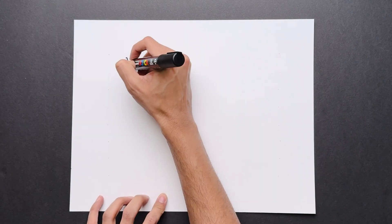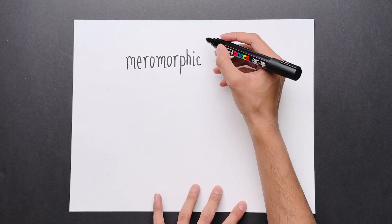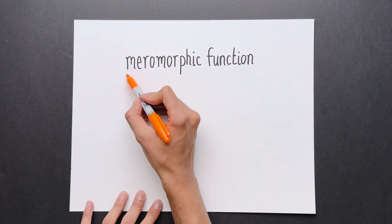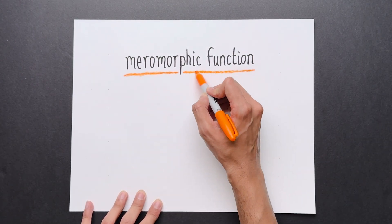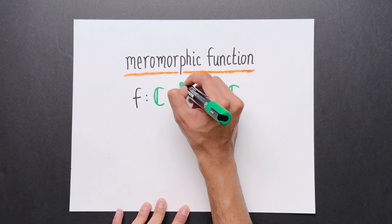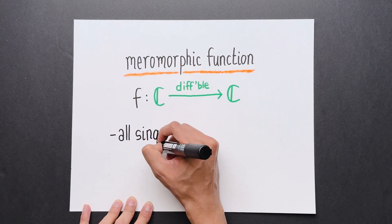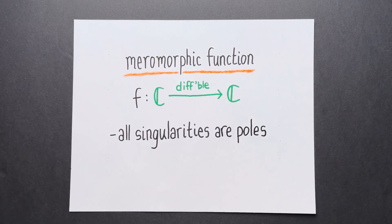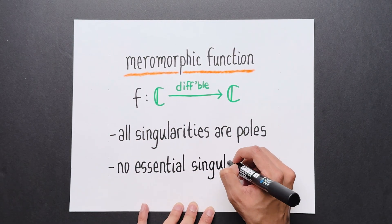The functions we're going to consider for the rest of the video are called meromorphic functions. Broadly speaking, a meromorphic function is a complex differentiable function f from C to C, where all the singularities are poles, and there are no essential singularities.